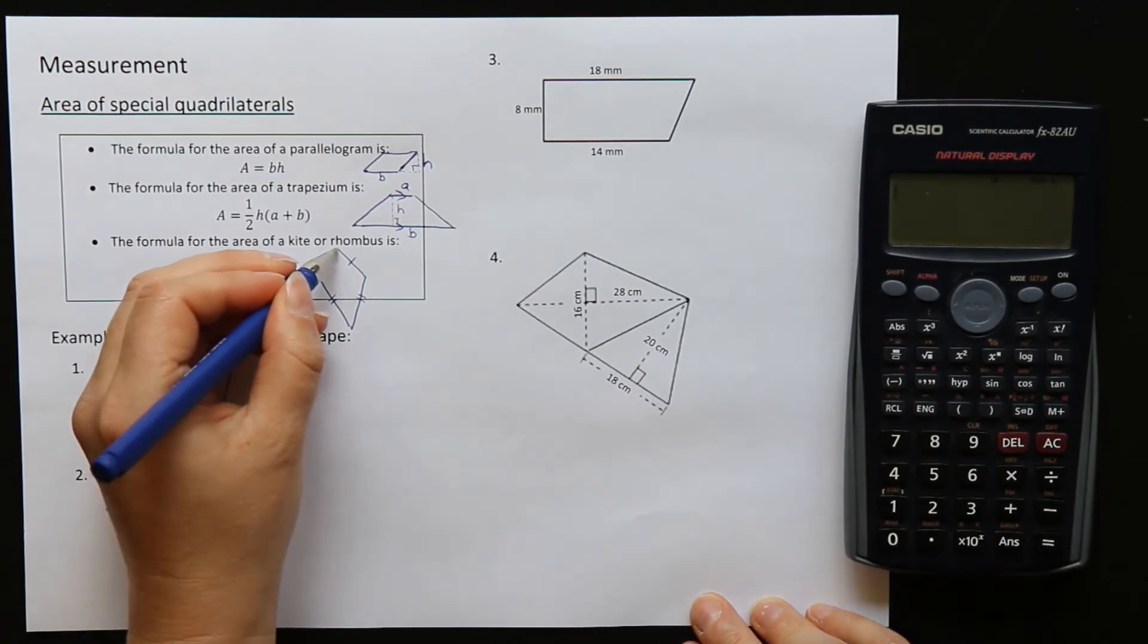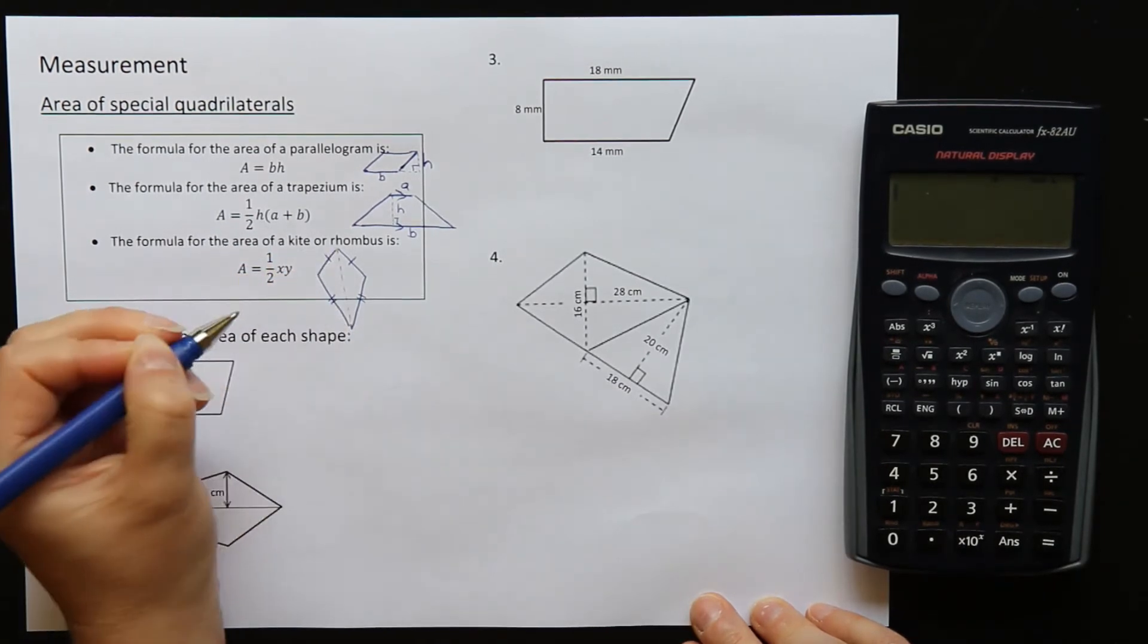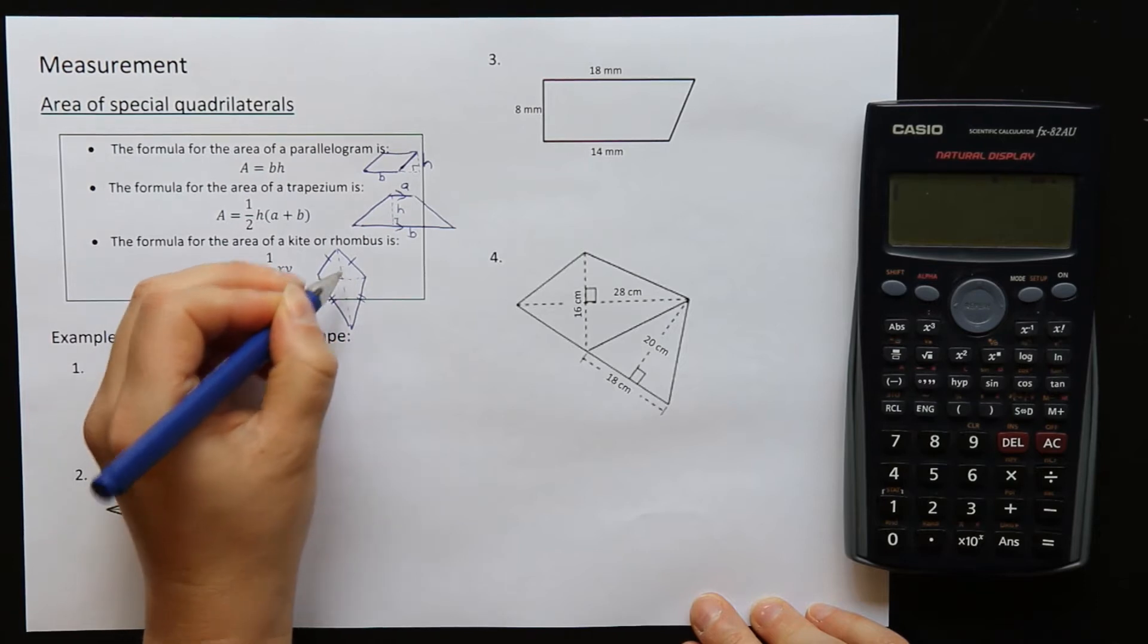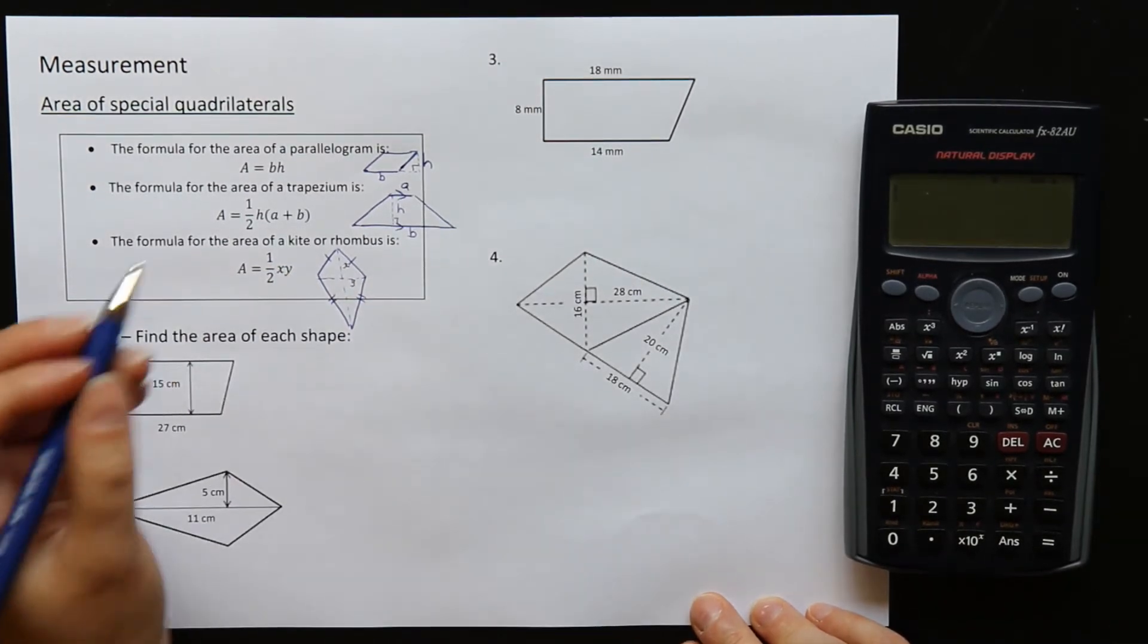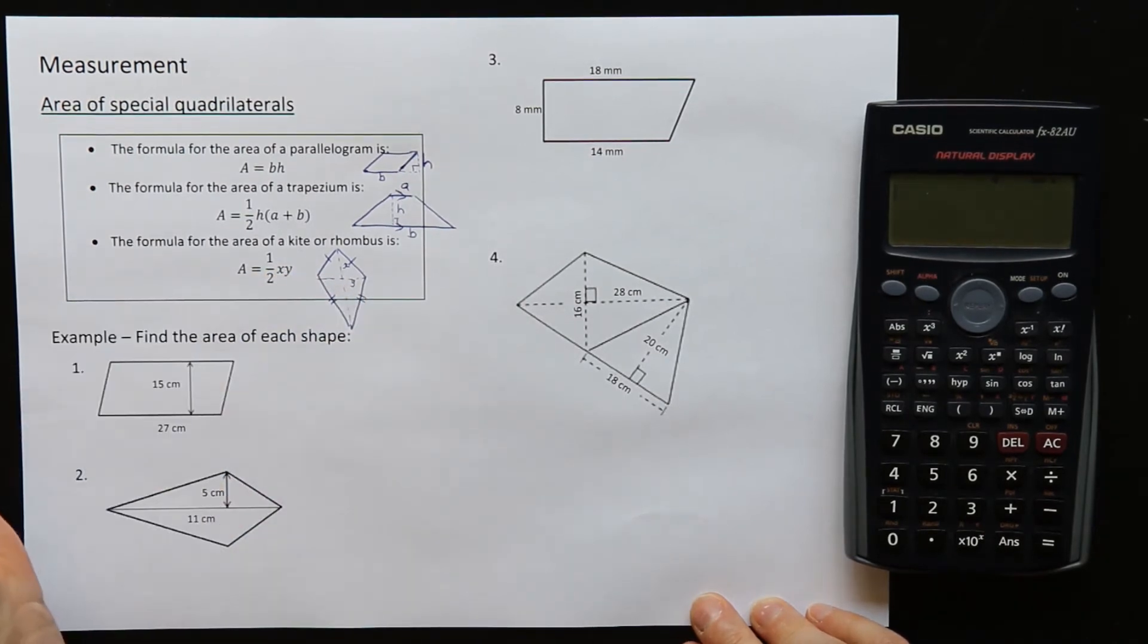X and Y are the diagonals, so going across there and across there, X and Y, the two diagonals. And it's the same for the rhombus. The two diagonals are the X and the Y. Okay, so they're the formulas that we're going to use today. Let's have a look in the examples how to use them.